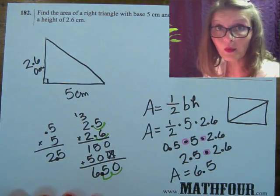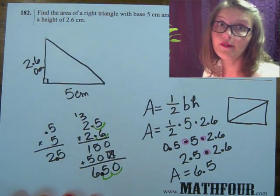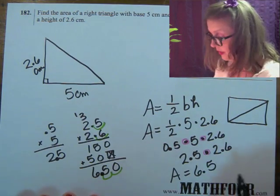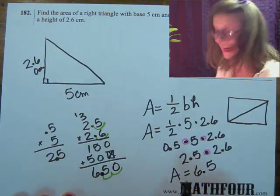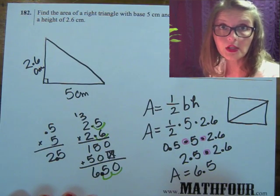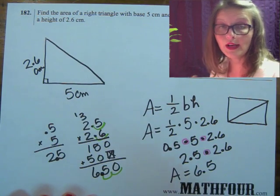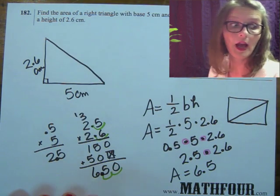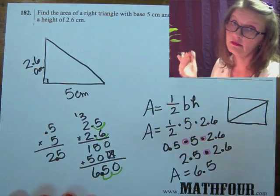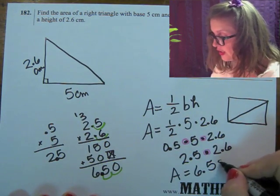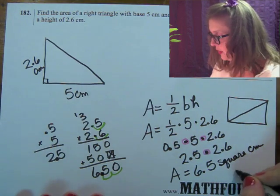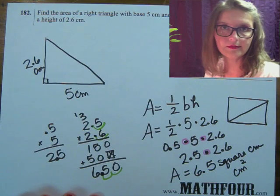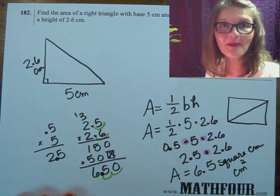Here's the kicker — 6.5 what? 6.5 centimeters? 6.5 glasses of milk? Well, we started with centimeters, and we multiplied 2 centimeters together. Area means you're going to be able to cover it with carpet. You don't measure carpet in regular numbers — you measure it in square numbers. How many square feet is it going to take to carpet this place? You need the square something. So this is square centimeters. I'm Bon Crowder with Math4.com, reminding you that math is not a four-letter word.